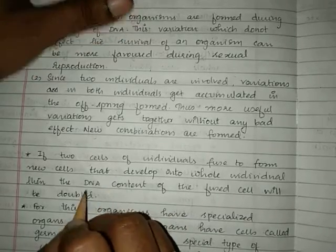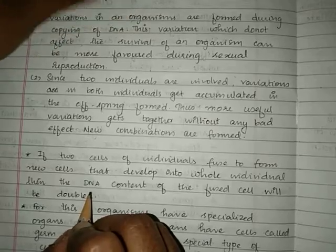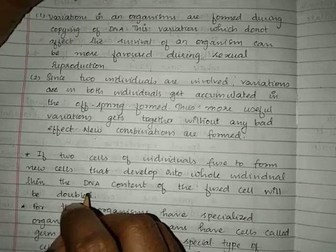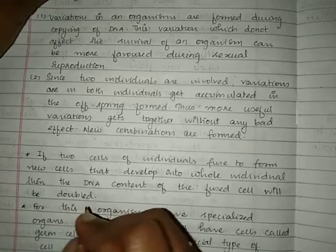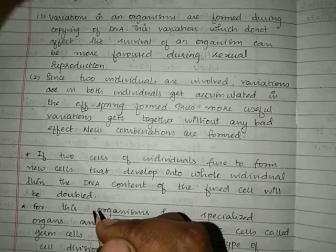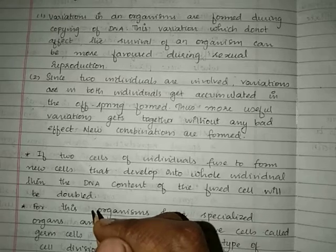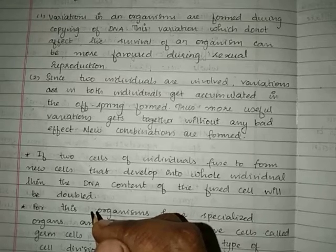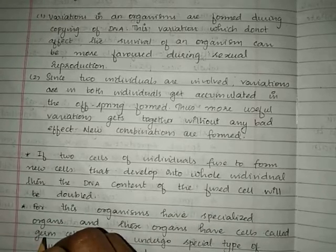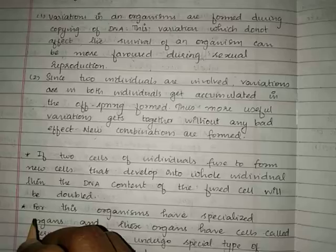If the DNA content simply doubles every generation without any correction, there would be a problem. Humans have 23 pairs of chromosomes. The cell from the male and the cell from the female will combine to form a new cell that grows into a complete baby.